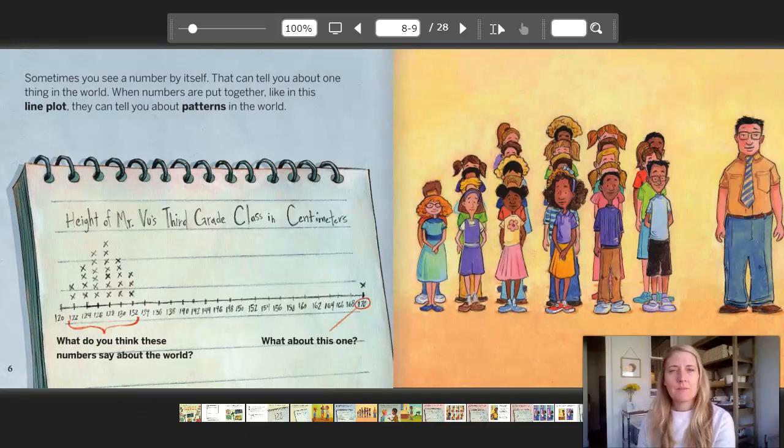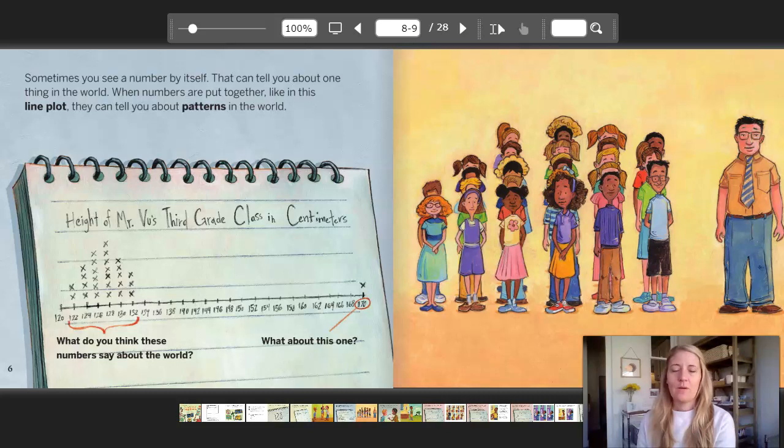Sometimes you see a number by itself. That can tell you about one thing in the world. When numbers are put together like this in a line plot, they can tell you about patterns in the world. On the notepad it says, height of Mr. Vu's third grade class in centimeters.